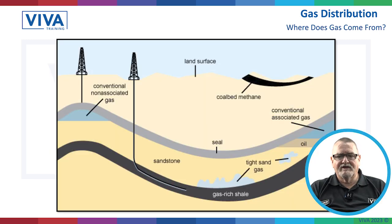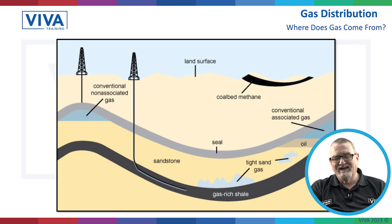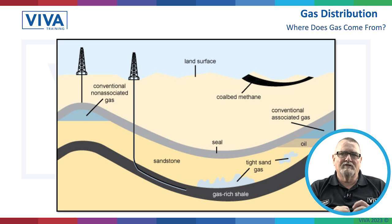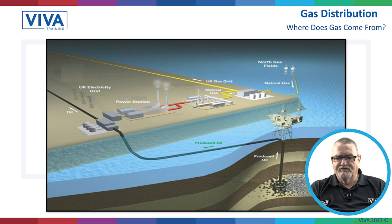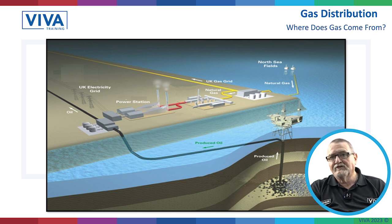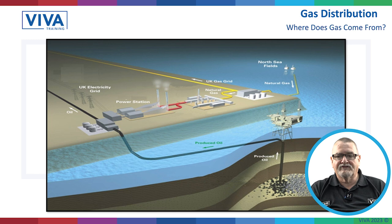This diagram shows a conventional non-associated gas formation, and methane in coal beds. We've got the land surface, the grey area which is the seal — typically a clay layer so gas can't escape — and then the gas-rich shale which we're extracting the gas from. Another diagram shows the gas being extracted, going through a processing plant, with some used in gas-fuelled power stations, and some going through to be refined into the UK gas grid.